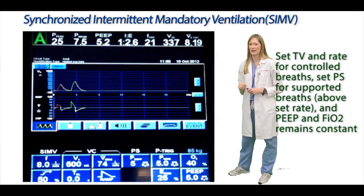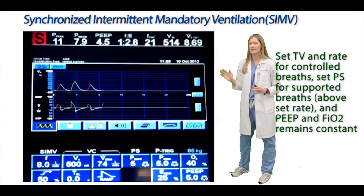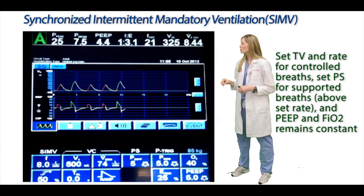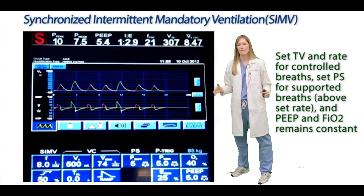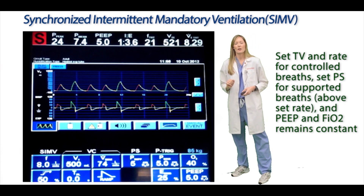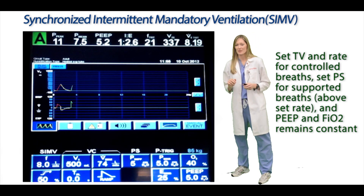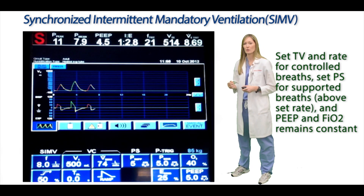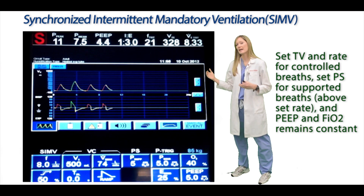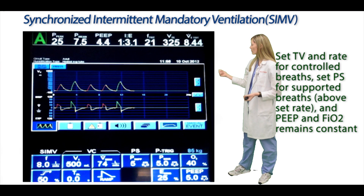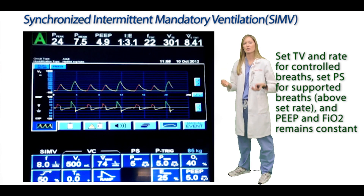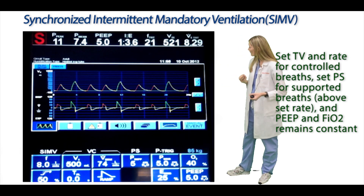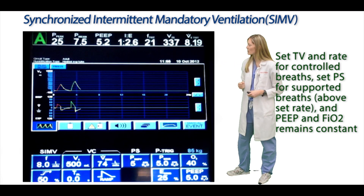The last mode we'll discuss is SIMV — synchronized intermittent mandatory ventilation. It sounds complicated, but it's just combining modes we've already talked about. When you set a rate of eight, the patient automatically gets eight fully assisted breaths per minute at the tidal volume you've set. However, most patients breathe more than eight times a minute, so the extra breaths — in this case around 12 additional breaths above eight — are supported breaths with a pressure support of five, giving a total of 10 cmH2O of inspiratory pressure including PEEP. You'll see this on the waveforms: some breaths are bigger (mandatory) and some are smaller (supported).